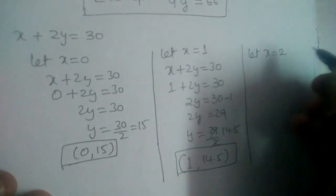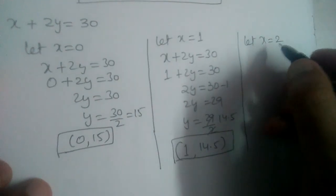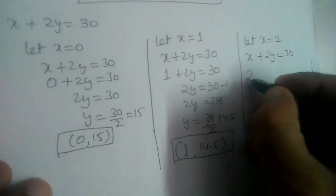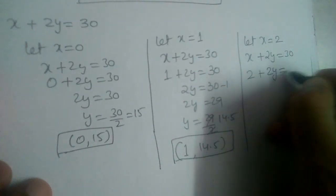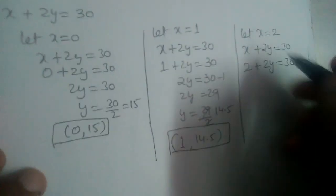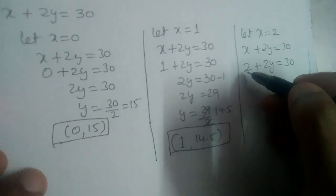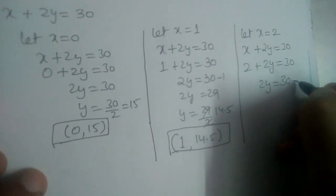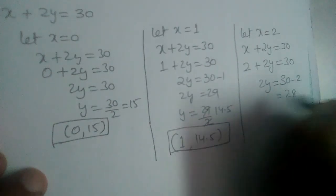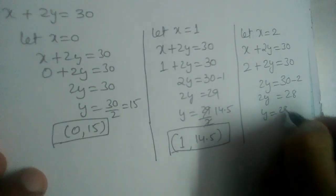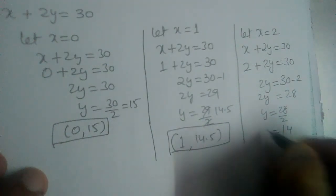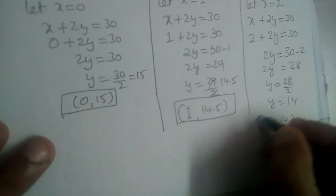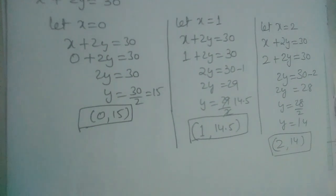Let x equal to 2. Substituting into x plus 2y equals 30, we get 2y equal to 30 minus 2, which is 28. So y equals 28 divided by 2, which is 14. The third solution is (2, 14).